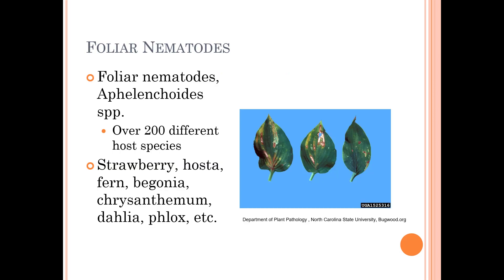Then there are foliar nematodes, with over 200 host species — strawberry, hosta, fern, begonia, chrysanthemum, dahlia, phlox, etc. You can see an example here on hosta.